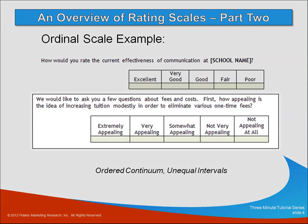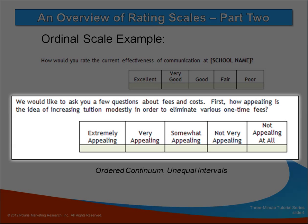In our second example of an ordinal scale, we asked parents how appealing is the idea of increasing tuition modestly in order to eliminate various one-time fees. Would you say extremely appealing, very appealing, and so on. Each response is unique and they're in rank order, but you can't say that the difference between them is equal.